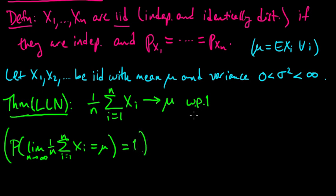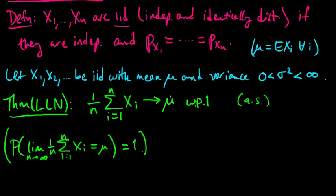That's what we mean when we say with probability 1. Sometimes this is also called almost surely — sometimes we write 'a.s.' So what's this saying? If we take our random variables, average them up over an infinite sequence, it's going to converge to the mean, to the expected value.